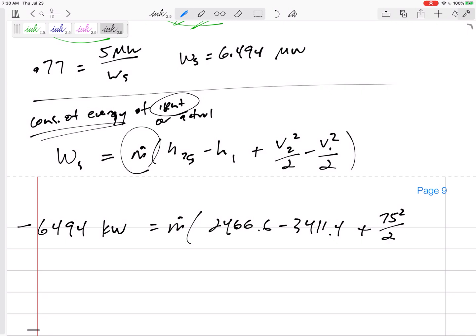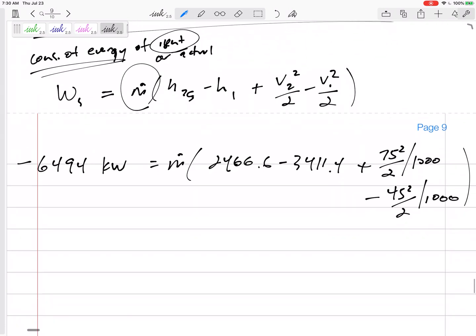Plus 75 squared over 2, divided by a thousand, minus 45 squared over 2, divided by a thousand to get my units to work out. I would get a mass flow rate of 6.886 kilograms per second. That is part A, that's the mass flow rate.